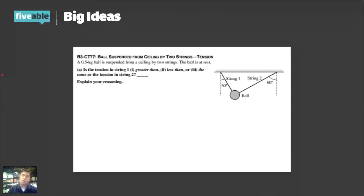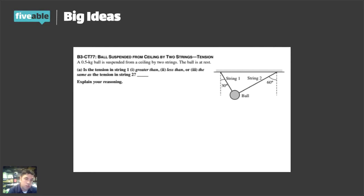This question has a ball suspended from a ceiling by two strings, and the ball is at rest — so no motion at all. We know this must be in equilibrium, so all vertical forces and all horizontal forces must cancel each other out. The question asks: is the tension in string one, the string on the left, greater than, less than, or equal to the tension in string two?